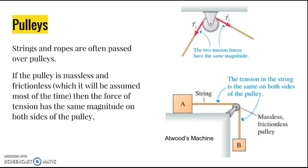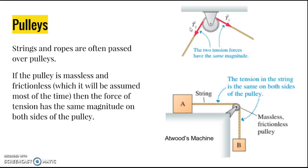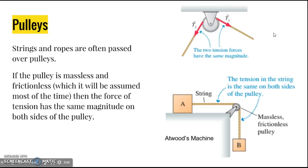Another object we'll see a lot in problems is a pulley — strings and ropes are often passed over pulleys. A pulley changes the direction of the rope. If we approximate the pulley as massless, the tensions in the rope are going to have the same magnitude on both sides — not the same tension force since they're in different directions, but the same strength, the same magnitude.